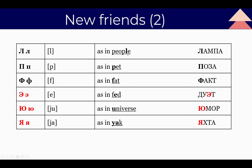Let's repeat: Б, Г, Д, Ё, З, И, Й. One more time: Б, Г, Д, Ё, З, И, Й. We are continuing with new friends. This letter is Л, sounds 'L,' as in 'people.' The Russian word: Л, А, М, П, А — Лампа. Can you guess? Yes, it's лампа — a lamp. Next is П, sounds 'P,' as in 'pet.' The word: Поза — a pose, like Madonna's 'strike a pose.'